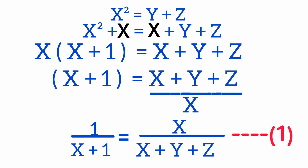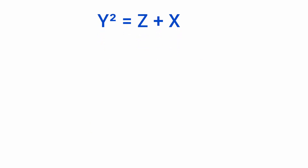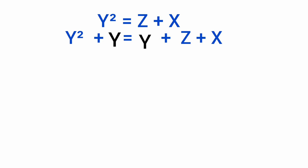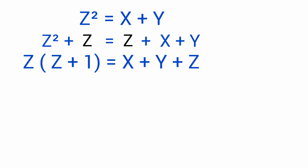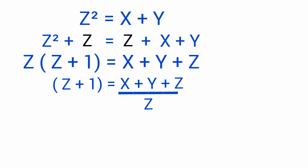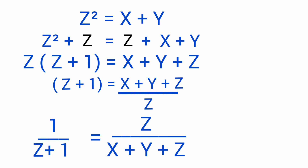Now for the term y² = z + x, adding y to either side and doing the same process, we get 1/(y+1) = y/(x+y+z). Let's call this equation 2. For z² = x + y, adding z to either side, we get 1/(z+1) = z/(x+y+z). Let's call this equation 3.